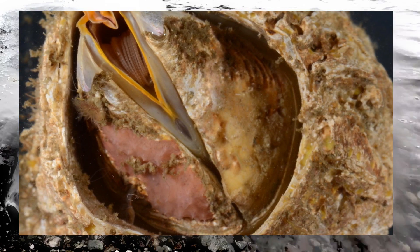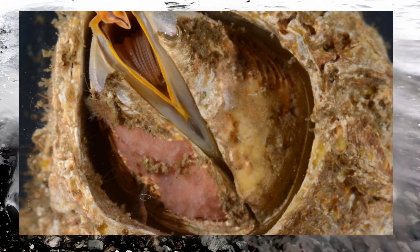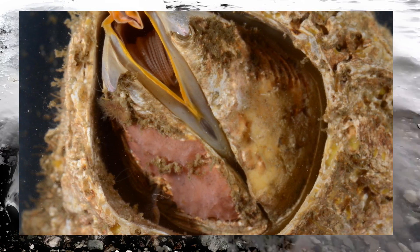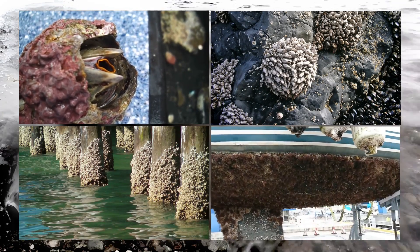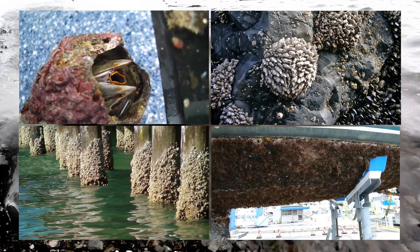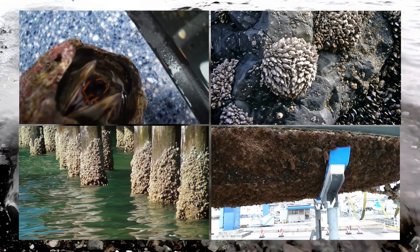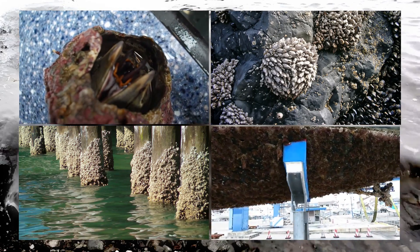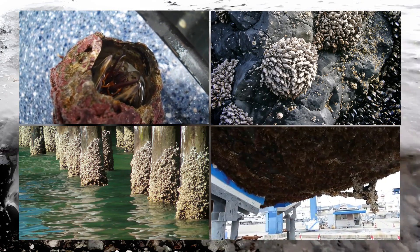Barnacles are covered with hard plates of calcium carbonate and can be found on hard surfaces such as rocky shores, docks, jetties, and ship hulls. Other than that, they can be seen on other sea creatures such as turtles and crabs.